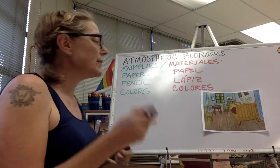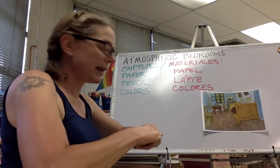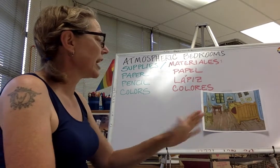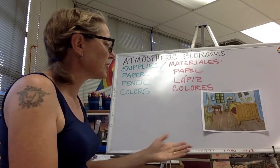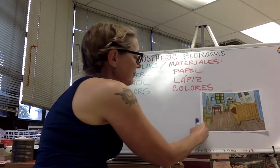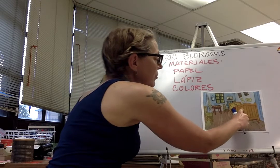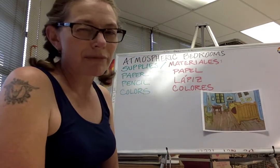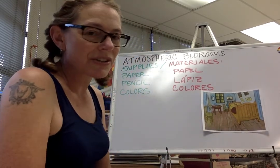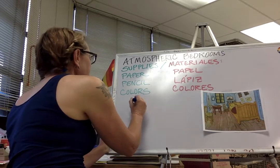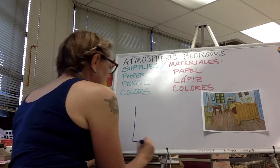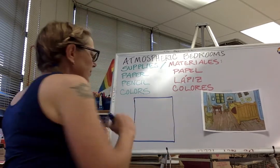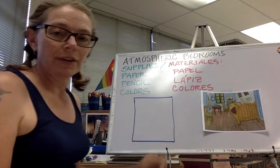So in order to make a perspective — an atmospheric perspective drawing — we need to draw the outline of the room first. I can see there's a floor, so that tells me it's probably a rectangle. We're going to say it's a rectangle. So there's the rectangle.